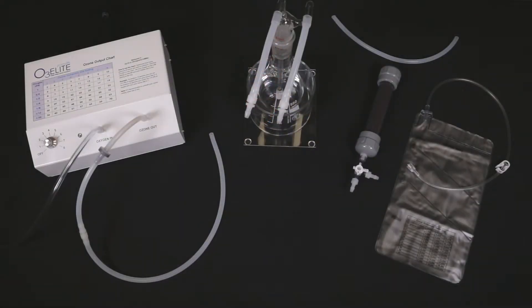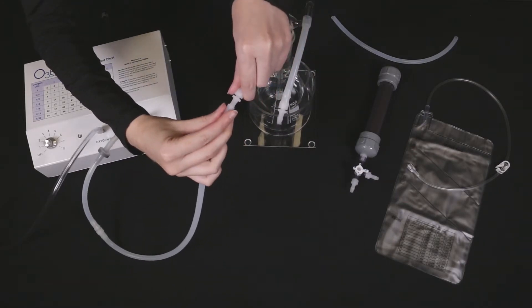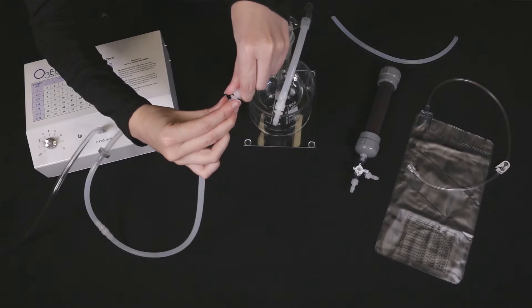Now, back to the 500ml bubbler humidifier combo. Connect the other end of the 5 feet of silicone tubing to the glass straw that goes all the way into the humidifier. We also call this the ozone in-straw.